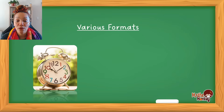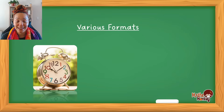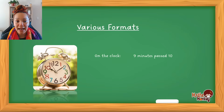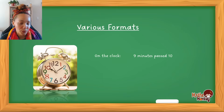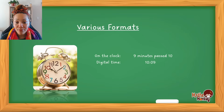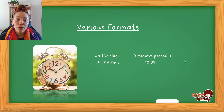The first way is analog, which is the clock you see on the slide, and then you also have digital time. On this clock the time is nine minutes past ten — that's how you would say or write it — and in digital format you would write it as 10:09.